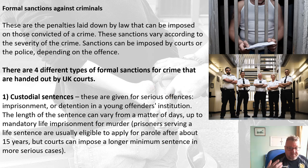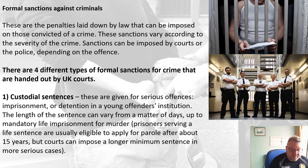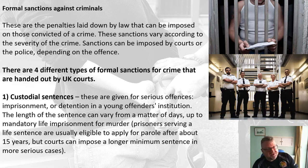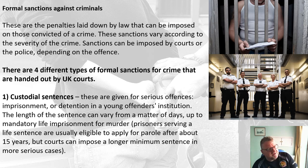Custodial sentences mean imprisonment in an adult prison or young offenders institution. The length can vary from days up to, if you commit murder, a mandatory life sentence — the judge has to give you a life sentence. Usually after a life sentence you're eligible for parole after about 15 years. However, courts can impose a much longer minimum sentence in more serious cases. For example, the person responsible for assisting in the Manchester Arena bombing was given a life sentence with a mandatory minimum of over 40 years.